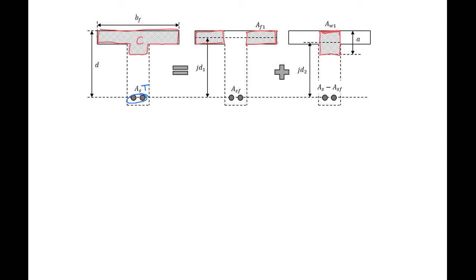So in the first section, we'll have a compression force, which I'll call c1, equal to 0.85 f prime c, which is the stress in our compression block, times the area of our compression block. So the area of our compression block is the total width bf minus our web width bw times the height of our flange hf.